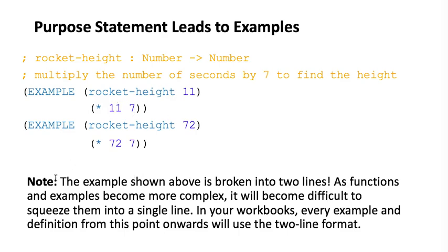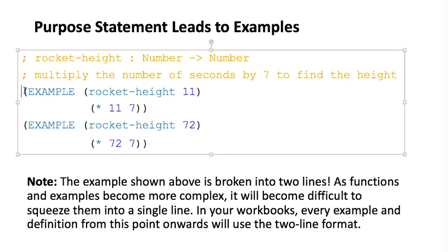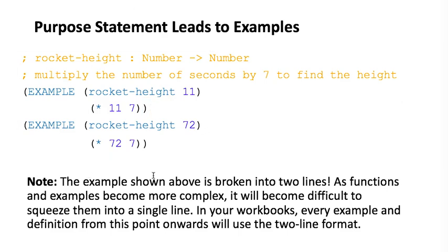Here are our examples. We keep building on this: here's the contract, here's the purpose statement, and now here are two examples. As examples get longer, you can put a carriage return and split onto two lines. The great thing about our student language is you can always tell from the parentheses where things start and end. So: rocket-height takes in a number — the number of seconds — multiplies that number of seconds by seven, and that result is the height returned by the function.